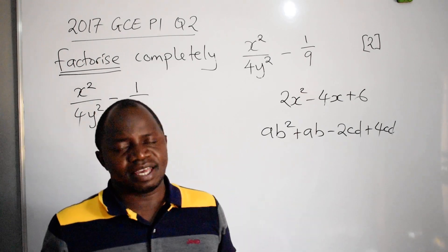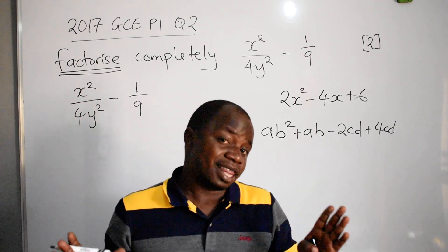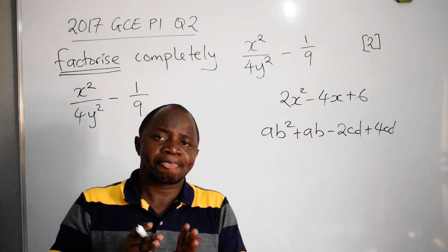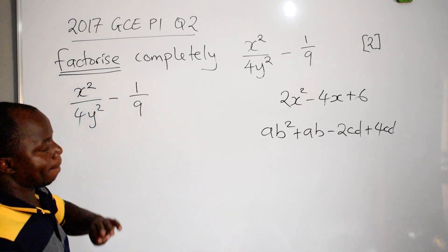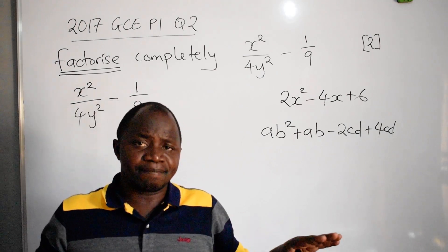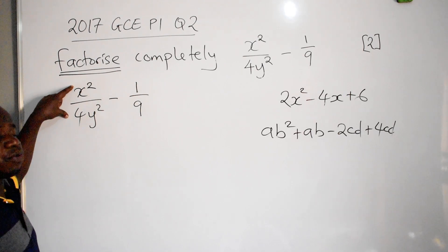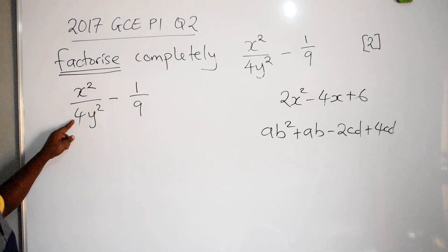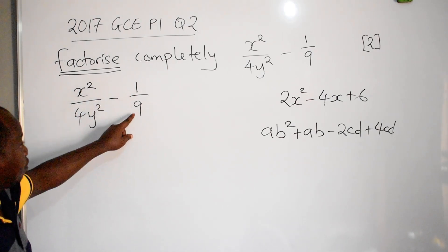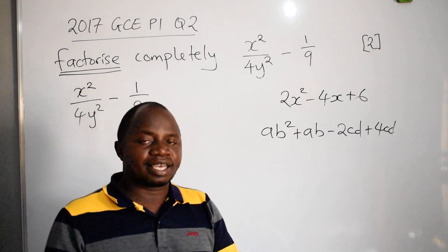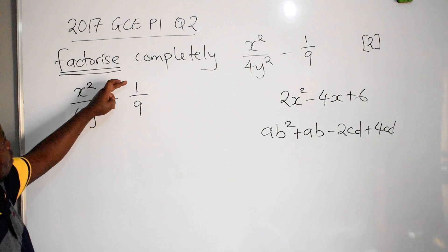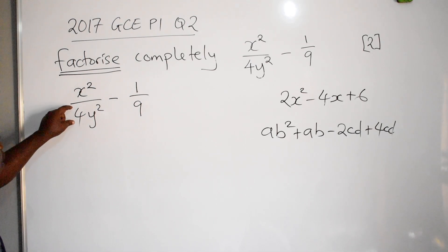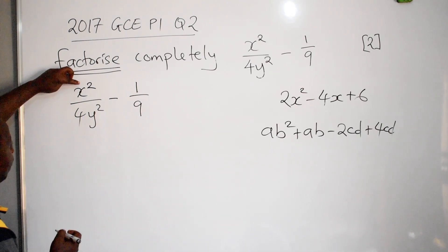The difference comes from the minus symbol in between. Everything must be in square form. Looking at the question, only x is in square form. Is 4 in square form? No. Is 1? No. Is 9? No. So your task is to express 4, 1, and 9 in square form.